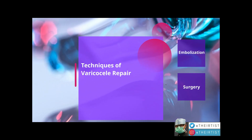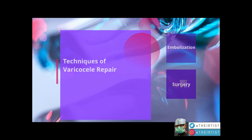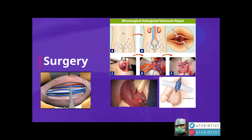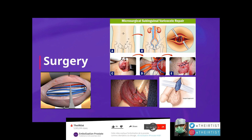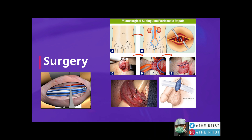The other main modality is varicocele surgery. There are various techniques. Surgery consists of opening and ligating the dysfunctional veins. The challenge for the surgeon is to ligate the vein without ligating the artery — otherwise you may lose the testicle — and without ligating the spermatic cord or the lymphatic vessels. When lymphatic vessels are ligated, you get hydrocele, which is an accumulation of fluid inside the testicle. The most sophisticated approach uses a microscope and is considered very efficient.